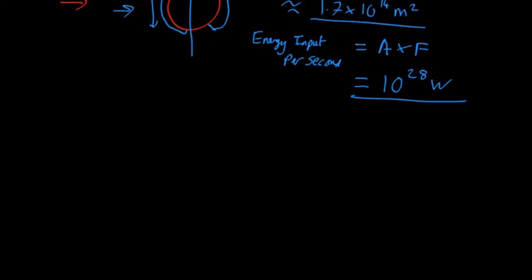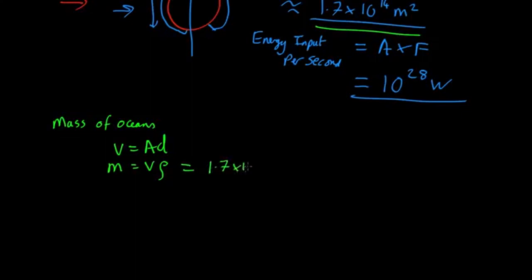Well, we can estimate that. What's the total mass of the world's oceans? On average, they're about four kilometers deep. The volume is equal to the area we've already worked out, times the depth of four kilometers. The mass equals the volume times the density. The density of water is 1,000 kg per cubic meter. So the mass is the area, 1.7×10^14 meters squared, times the depth, 4,000 meters, times the density, which comes out as about 7×10^20 kilograms.